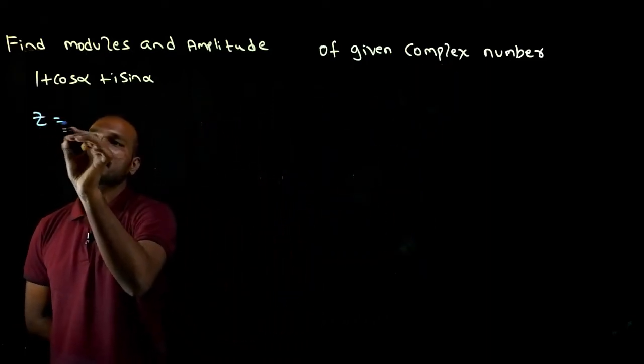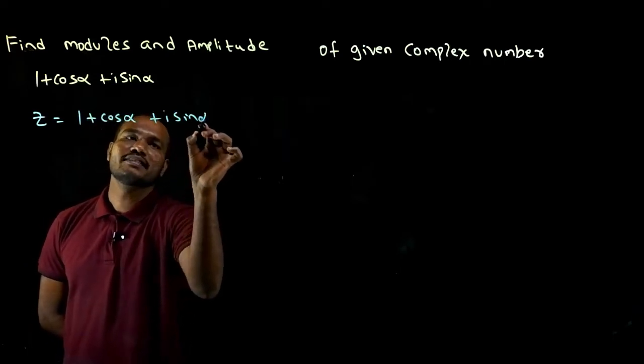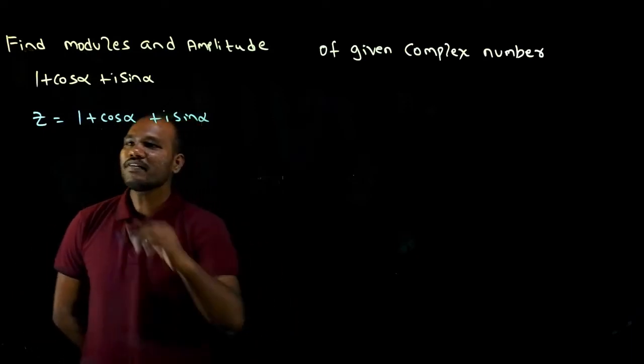Let's rewrite the question. What is given? Z is given as 1 plus cos alpha plus i sine alpha. This is the question given.